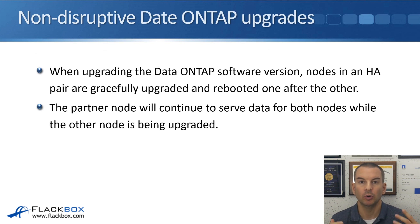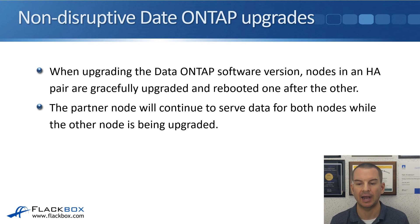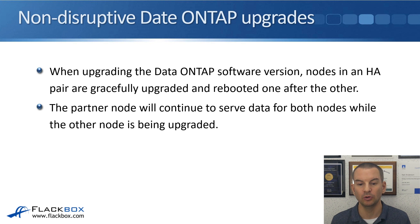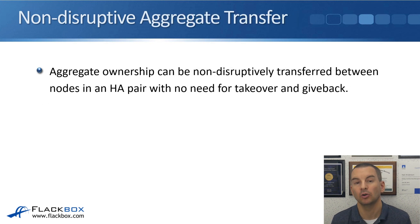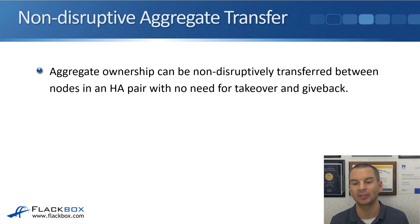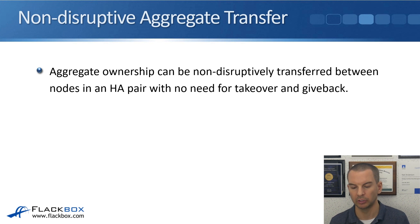For upgrades, when upgrading the ONTAP software version, nodes in an HA pair are gracefully upgraded and rebooted one after the other. A reboot is an essential part of that process. The partner node continues to serve data for both nodes while the other node is being rebooted and upgraded. Aggregate ownership can also be non-disruptively transferred between nodes in an HA pair with no need for takeover and giveback.